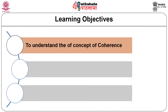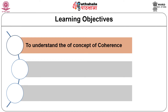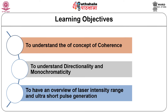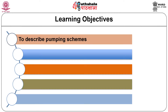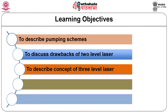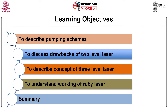In the first part we will understand the different properties of laser: first we understand what is coherence, then what is directionality and monochromaticity, and an overview of laser intensity range and short pulse generation. In the next part of the same module we will describe some pumping schemes, some drawbacks of two-level laser pumping scheme, what is a three-level laser system, understanding the working of ruby laser, and finally we summarize the module.